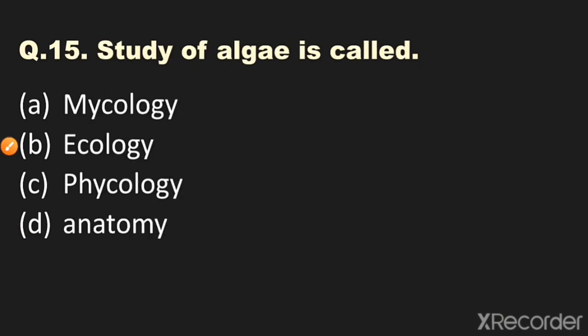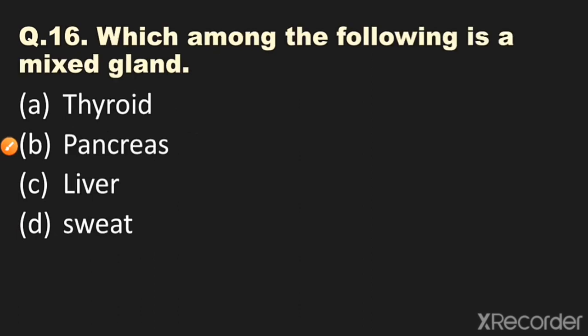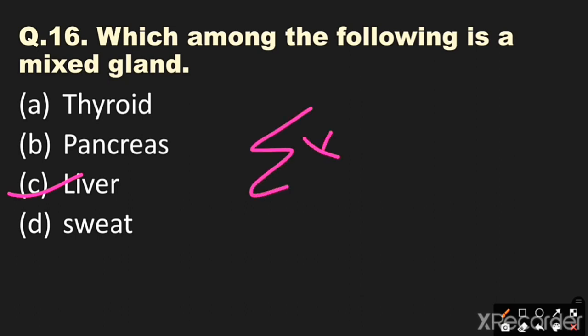Question number fifteen: The study of algae is called? Options: A) mycology, B) ecology, C) phycology, D) anatomy. The answer is phycology — the study of algae is called phycology. Question number sixteen: Which among the following is a mixed gland? Options: A) thyroid, B) pancreas, C) liver, D) sweat. The answer is liver — the liver is a mixed gland having the characteristics of both exocrine and endocrine glands.